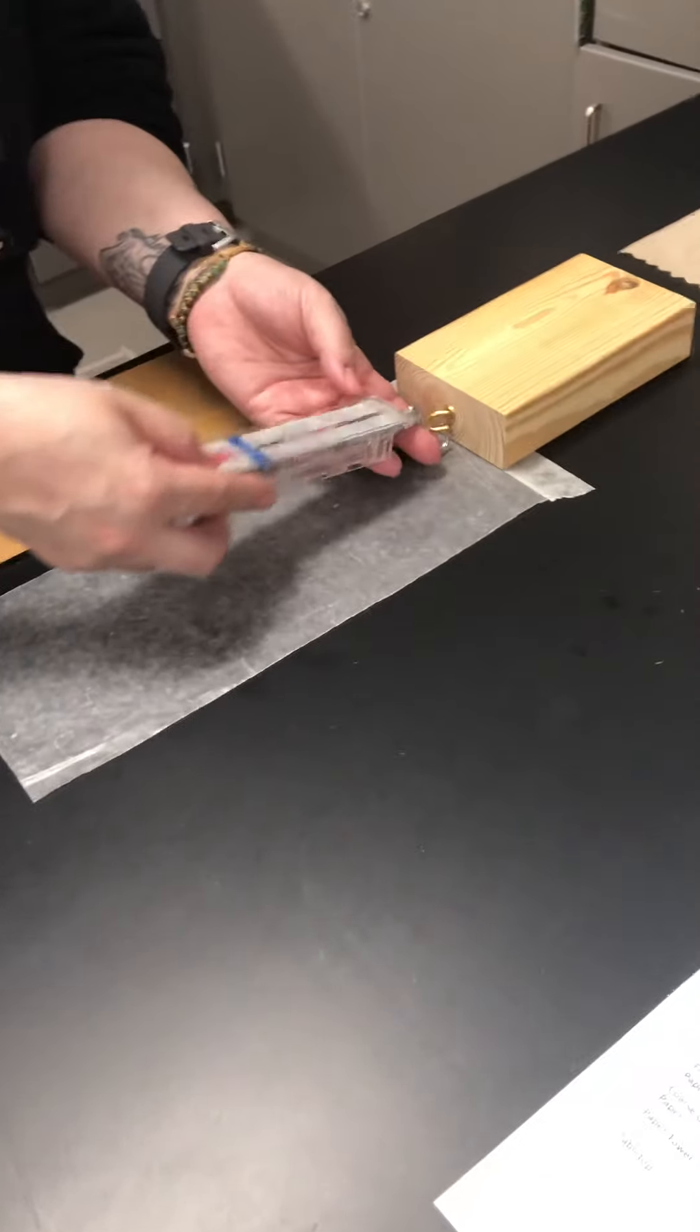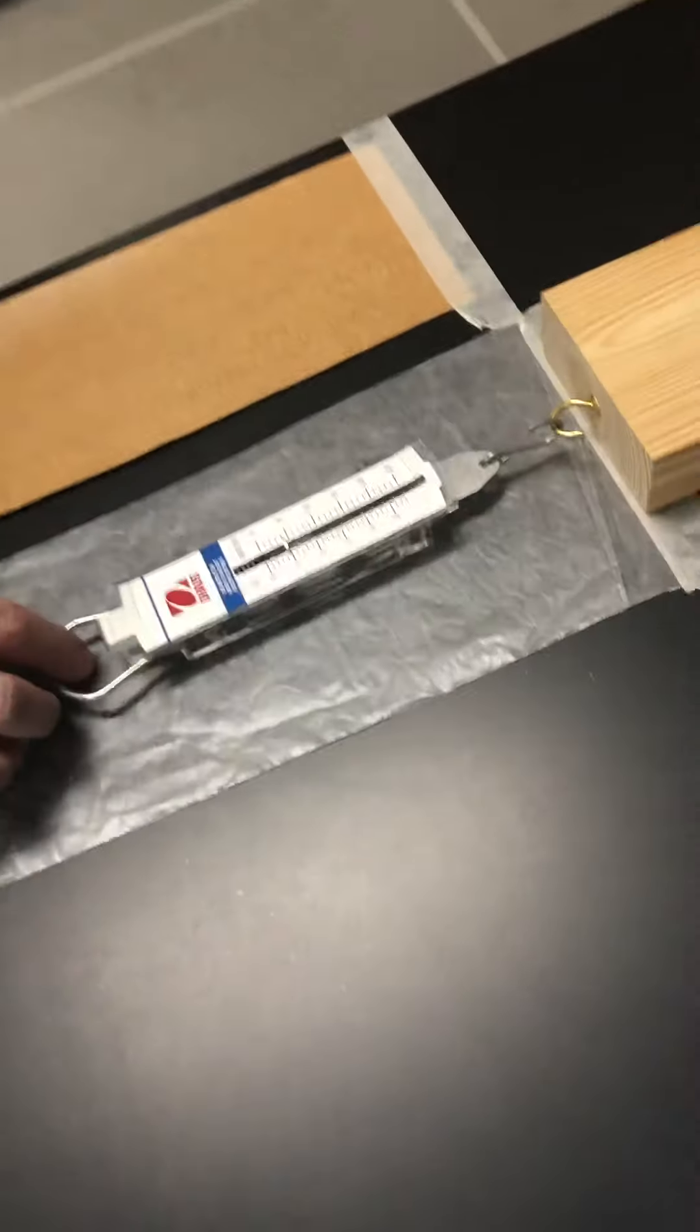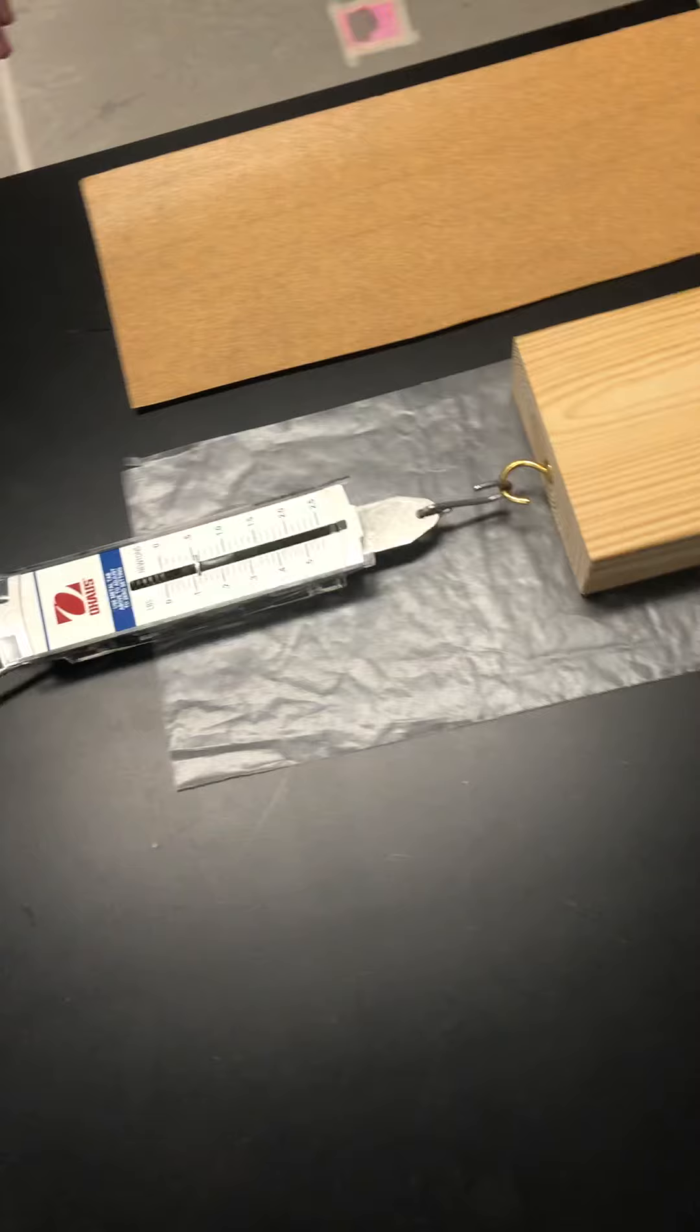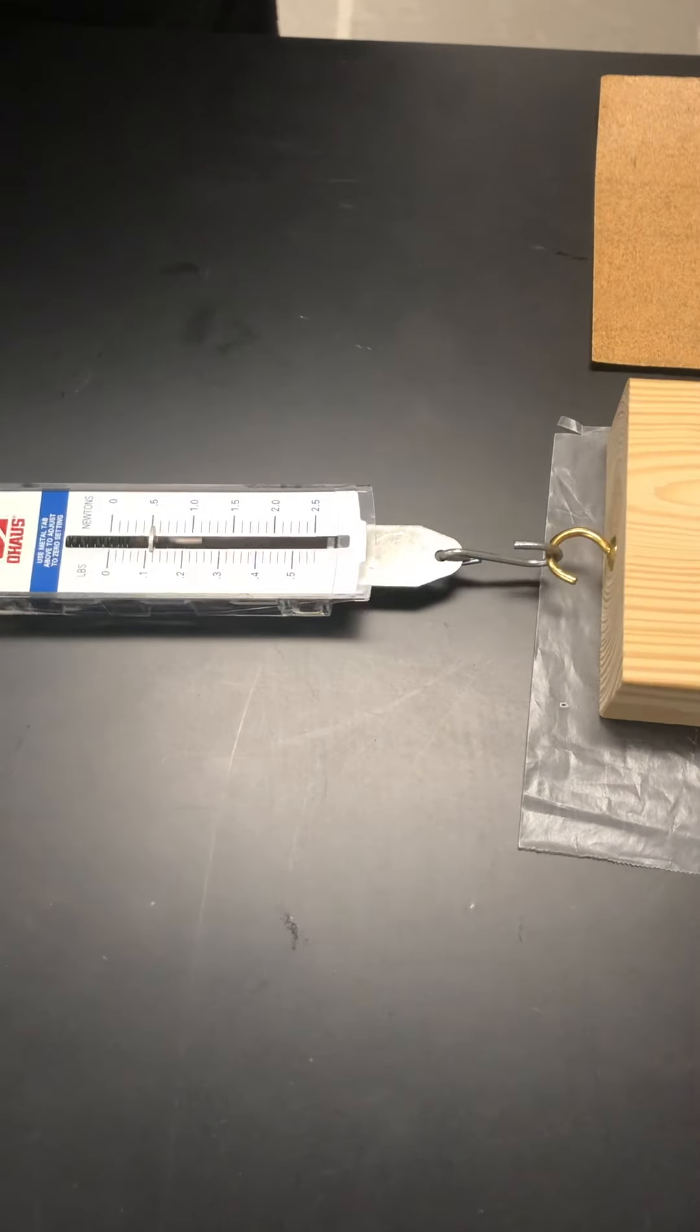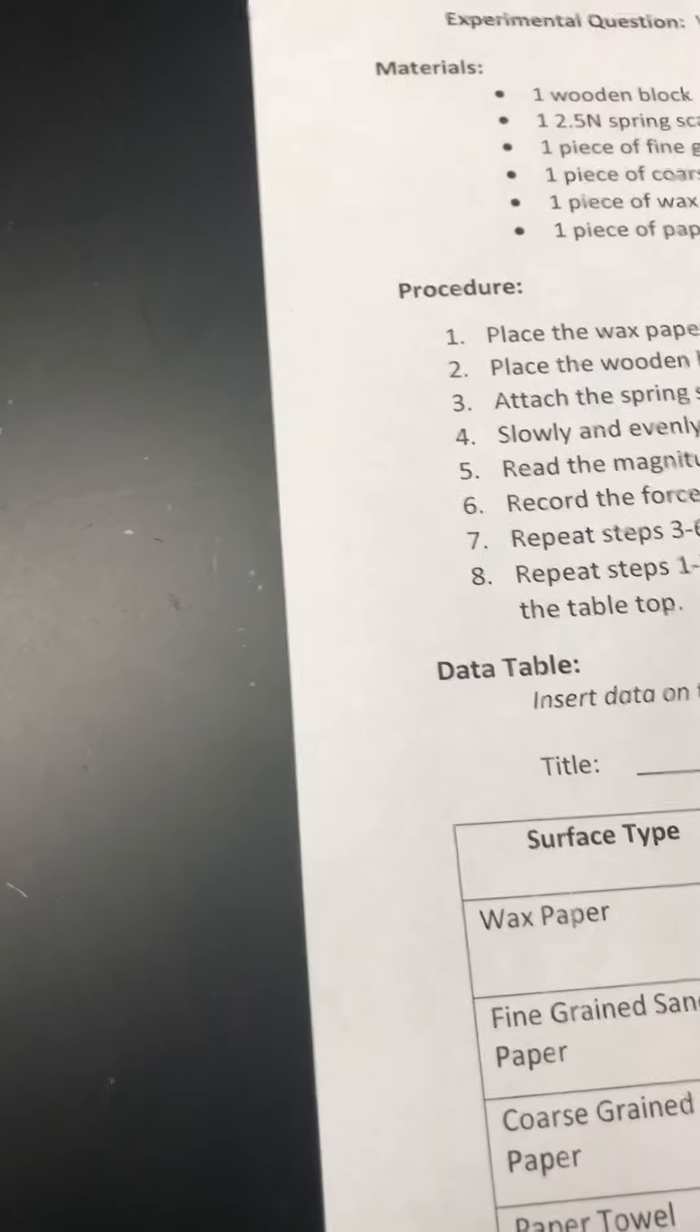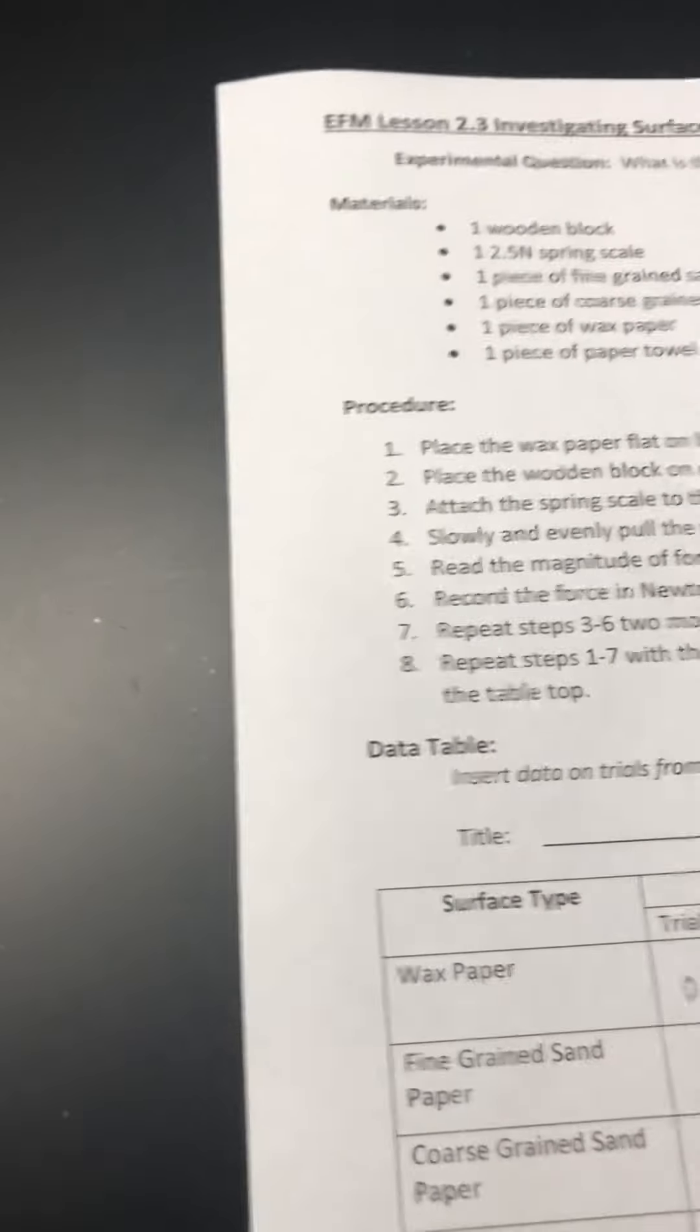Alright so our first surface type is going to be wax paper. As you can see the spring scale is attached to the wooden block and we're measuring. You have to kind of eyeball the frictional force required to pull it across the surface type. So for trial one on wax paper is 0.50 newtons.